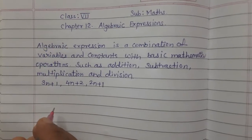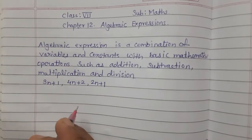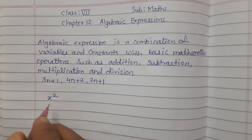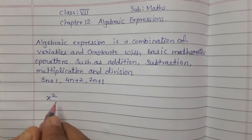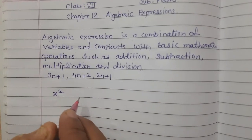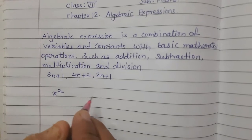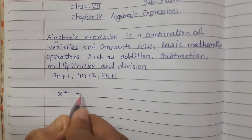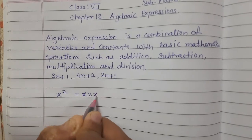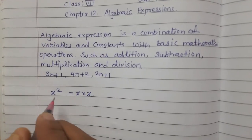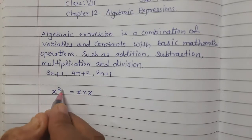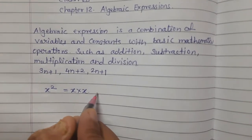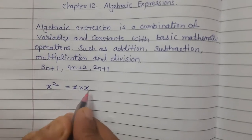Let's see now how expressions are obtained. Suppose here x squared. The expression x squared is obtained by multiplying the variable x by itself: x times x.